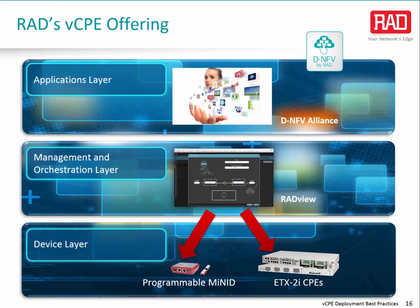RAD's award-winning DNFV offering supports any of the VCPE implementation scenarios described in this presentation. This multi-layered offering is part of RAD's service-assured access solutions and includes ETX 2i Layer 2 and Layer 3 NIDs with a powerful x86 platform for hosting virtual network functions at the customer edge, the MyNID Miniature Programmable NID for downloading demarcation and networking applications, RADView Comprehensive Management and Orchestration for Access Networks, and special virtual functions available via RAD's DNFV Alliance, an ecosystem of application developers and system integrators. This offering is designed to improve the way service providers compete, enabling service agility to minimize time to revenue, complete visibility of network performance for greater operational efficiency, and better quality of experience to reduce churn and lower total cost of ownership.